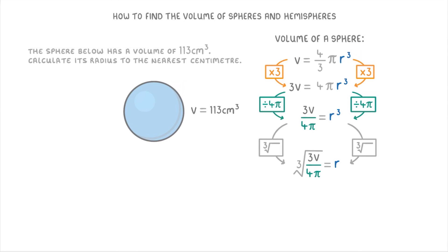And now that we've got r by itself, we can plug in the volume of 113 and work it all out. So the cube root of 3 times 113 divided by 4 pi, which if you put into a calculator will give you 3. So the radius is 3 centimeters.